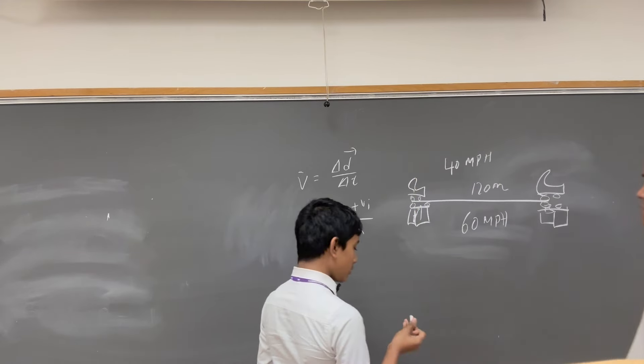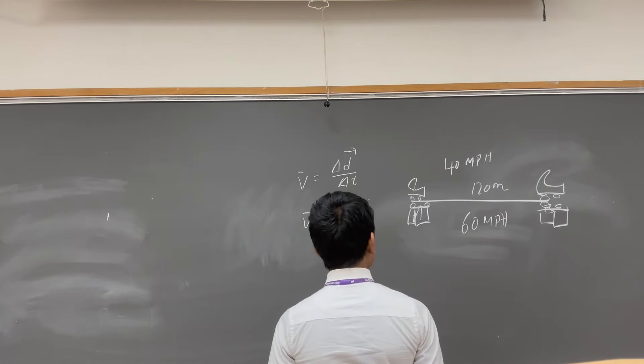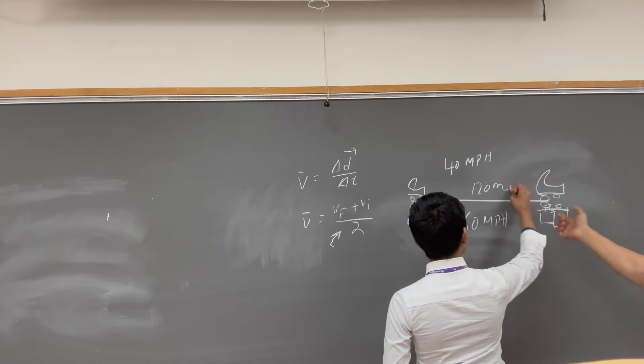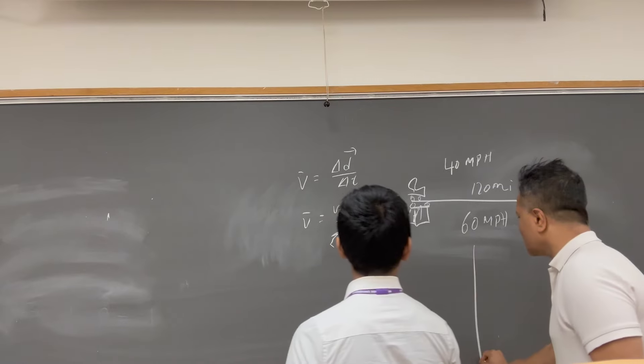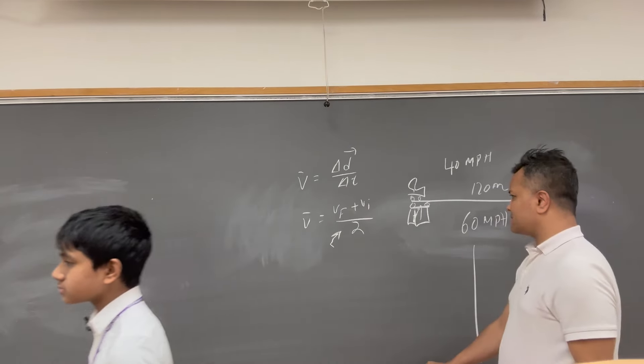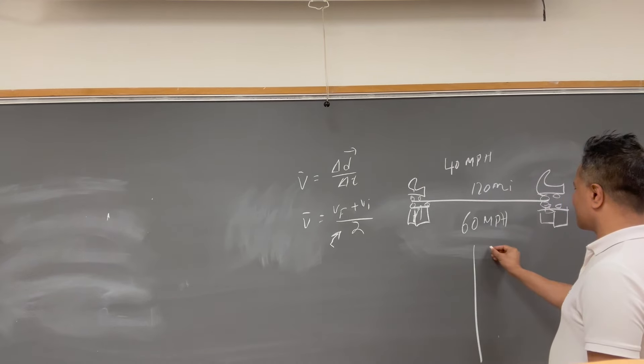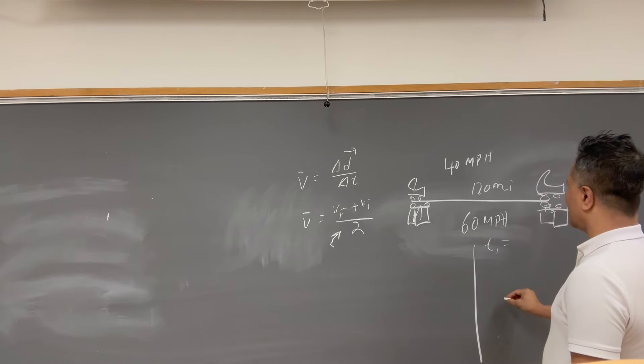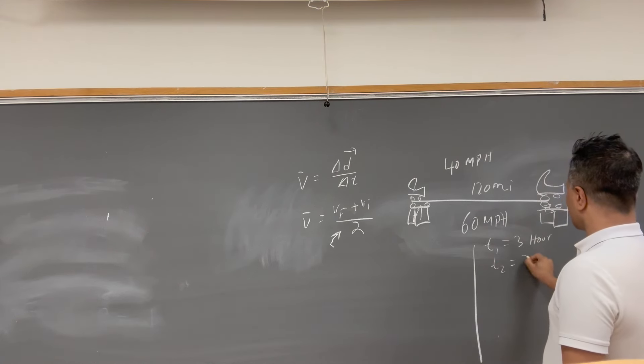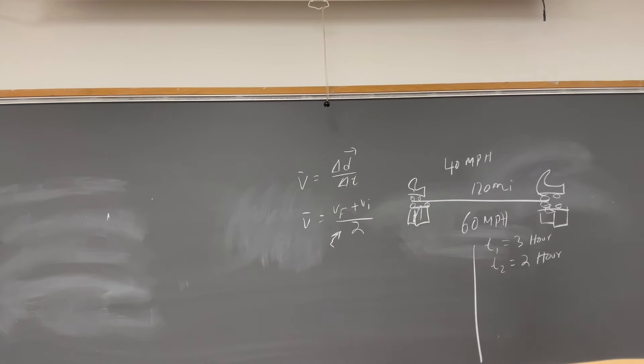But, here's what we're going to do. First of all, how can we figure out? Can I do one and you do the other one? Sure. So, I'll do the first one. As I said, you don't need distance, but let's do this. T1 is going to be 3 hours. And T2 is going to be 2 hours. How is that? Because T1 is distance over velocity, 120 over 40. This is 3. And this is 120 over 60. So, this is 2. Very nice.